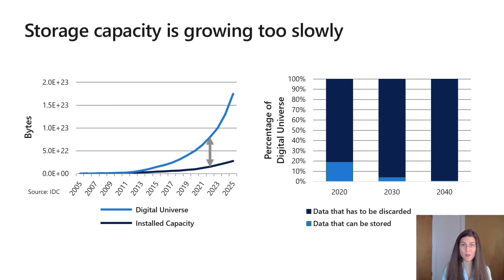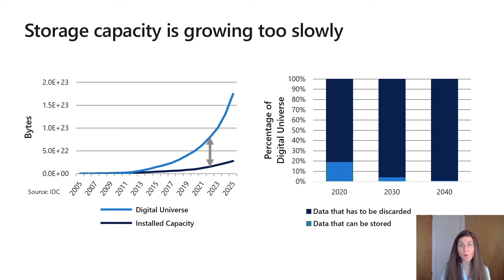Let me talk about one such problem. What I'm showing here on the left is a chart by IDC that many of you are very familiar with, showing the growth of the digital universe — meaning all the bits we generate over time — and contrasting that with the installed capacity, meaning all bits we can store in devices over time. There's a gap, and it's a growing gap. I'm not advocating that we store all the information we generate; there's lots of temporary data we can discard. But the issue is that we want to store a portion of the information, and that portion, if we simply follow this trend, is shrinking — and that's what I'm showing here on the right.